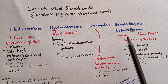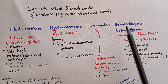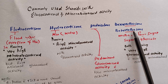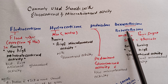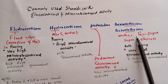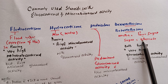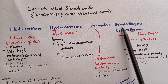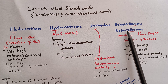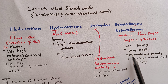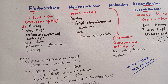For dexamethasone and betamethasone, if you see the word 'meta' — meta means sugar, and sugar means saccharide, i.e., glucose — so betamethasone and dexamethasone have very high glucocorticoid activity with minimal mineralocorticoid activity.